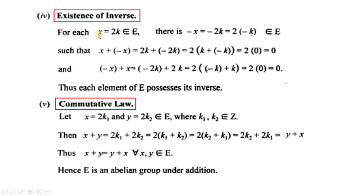Existence of inverse: for x = 2k, this is an even integer. We have another integer −x which is equal to −2k, and −2k is also equal to 2·(−k), so it belongs to E. Adding x and −x and putting the values and simplifying, we get 2·0 = 0. It means x + (−x) = 0, where 0 is the additive identity. Similarly (−x) + x = 0. Hence every even integer has an additive inverse.